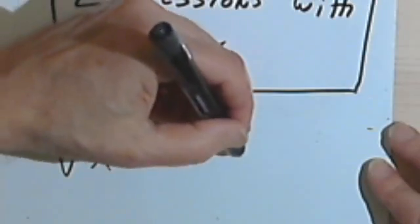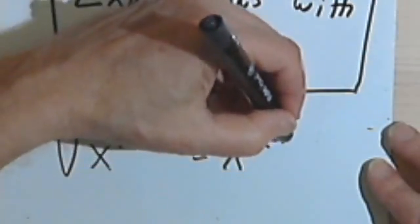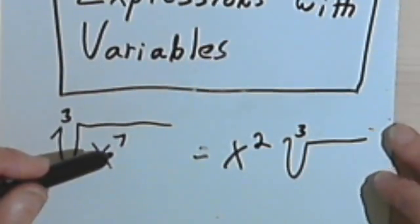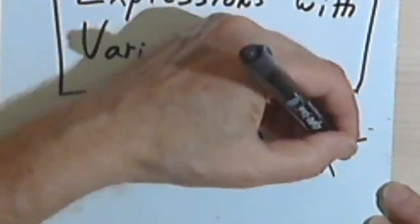That's going to give me an exponent that I'm going to use outside of the radical sign. But when 3 was divided into 7, there was one remainder. The 1 is going to be an exponent that I put under the radical sign.